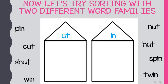Now let's try sorting with two different word families. The first house has the 'ut' word family. The second house has the 'in' word family. So let's start and put all the words into the right family. Let's start with our first word: 'pin.' I hear 'in' — I-N — so it's going to go in the 'in' word family.